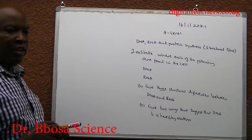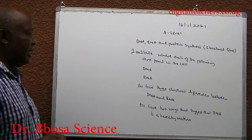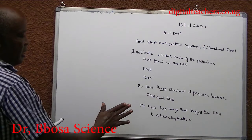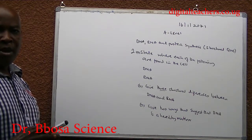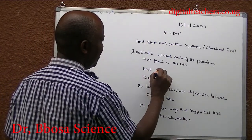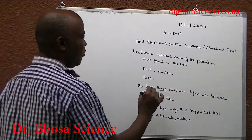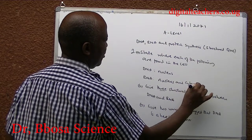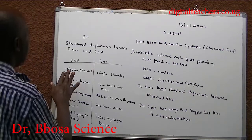Number 2A: state where each of the following are found in the cell — DNA and RNA. B: give three structural differences between DNA and RNA. Give two ways that suggest that DNA is hereditary material. DNA is found in the nucleus of the cell. RNA is located in both the nucleus and cytoplasm. Actually, it is manufactured in the nucleus and operates in the cytoplasm.